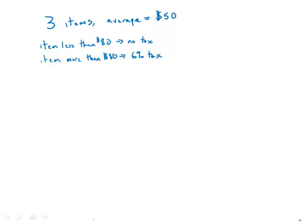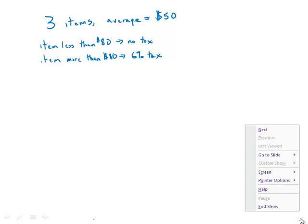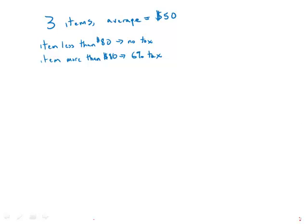The average price of the three items that Kate purchased from a clothing store was $50. If there was no sales tax on any item that had a price less than $80 and 6% sales tax on all other items, what was the total sales tax on the three items that Kate purchased?